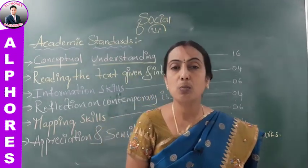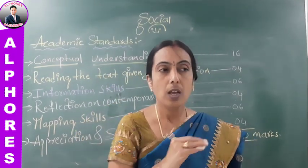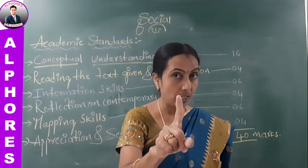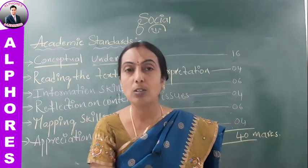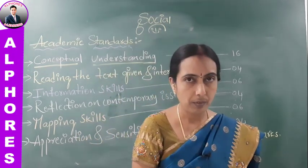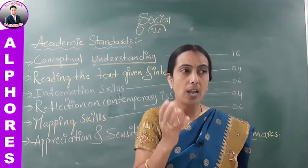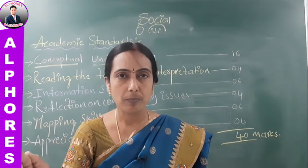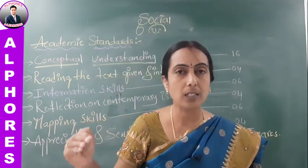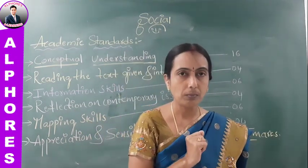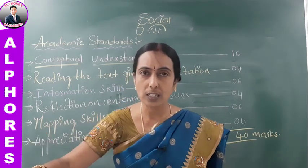Next question: 'Write about the movements of the earth.' Like other planets, earth also possesses movements of two types — rotation and revolution. Write side headings for each. Rotation: Earth rotates around its own axis from west to east at a speed of 1600 kilometers per hour. Earth takes exactly 23 hours 56 minutes — approximately one day — to complete one rotation. Because of earth's rotation, days and nights are formed. Three points on rotation completed.